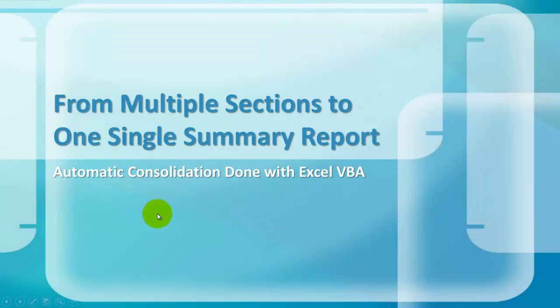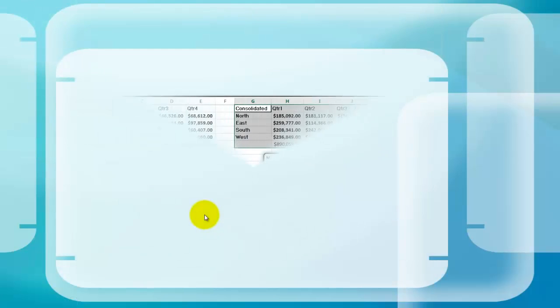Sometimes you have multiple sections on the spreadsheet that you would like to summarize in one single report. This is called consolidation. This can be done automatically with Excel VBA.